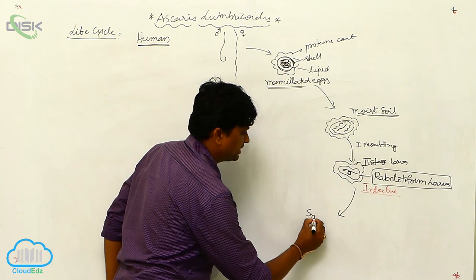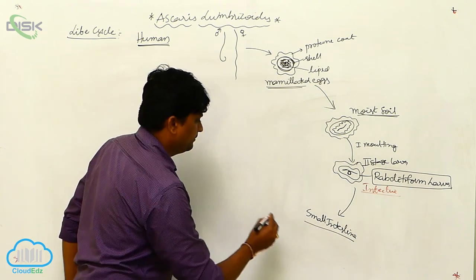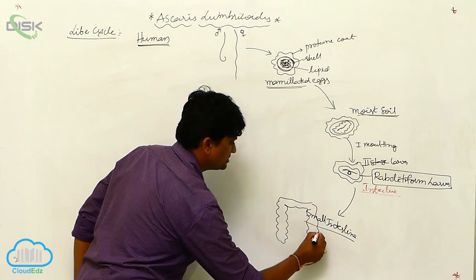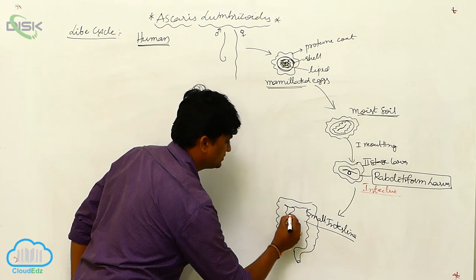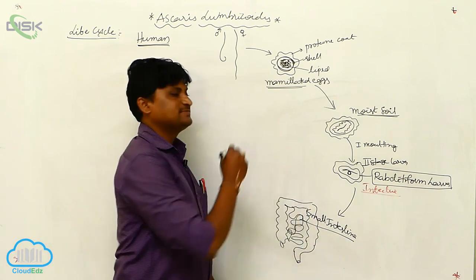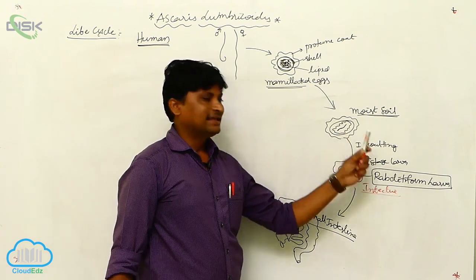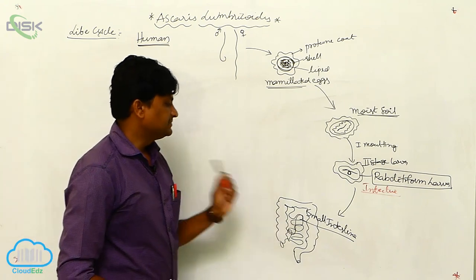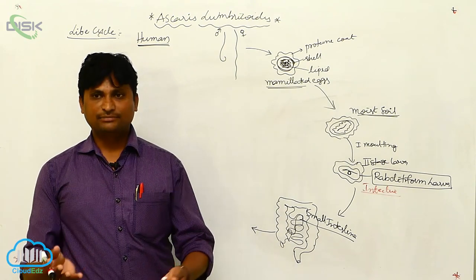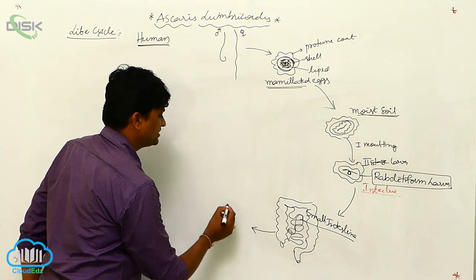The contaminated food or water carries the second stage rhabditiform larva back to the human small intestine. In the small intestine, all the coatings — protein coating, lipid coating, and chitinous coating — are dissolved, and the small larva comes out. These larvae then begin extra-intestinal migration.